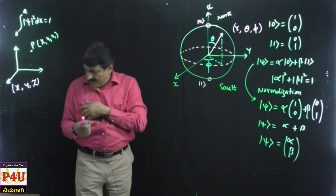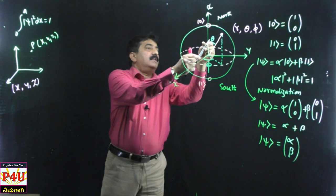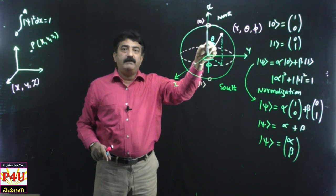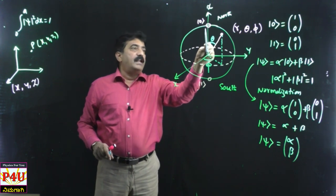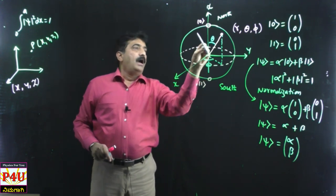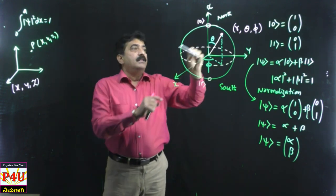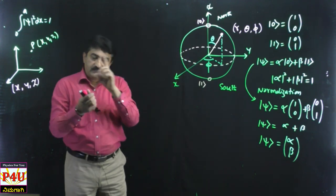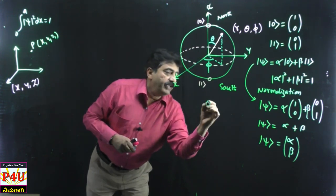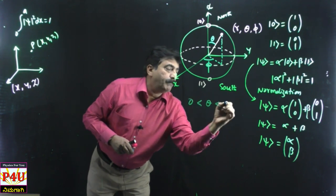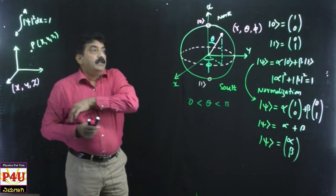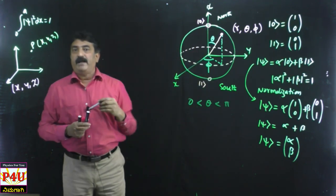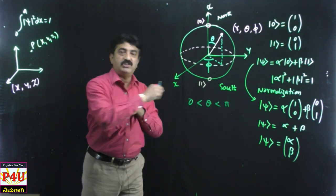If I treat the line as being along the z-axis, theta will be 0. Now move the line in any direction — theta keeps on changing. Theta can vary between 0 and pi. When the line is along the z-axis, theta is 0; when it is along minus z-axis, it is pi, that is 180 degrees. That is the range of theta.